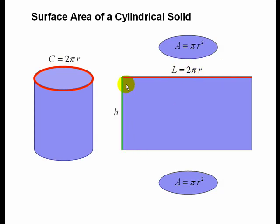We have a height for the rectangle, and so the area of this rectangle is the length times the height, 2 pi r h.